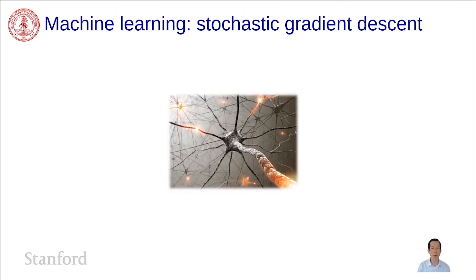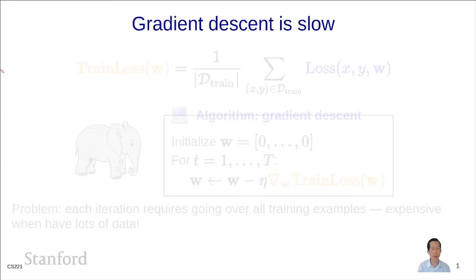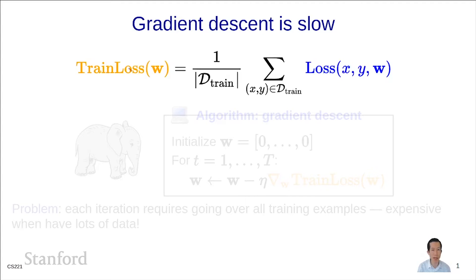In this lecture I'm going to talk about stochastic gradient descent. Recall gradient descent, which was the optimization algorithm we decided on for optimizing all our training losses for classification and regression. The training loss is an average over all the examples in the training set of the per-example losses.